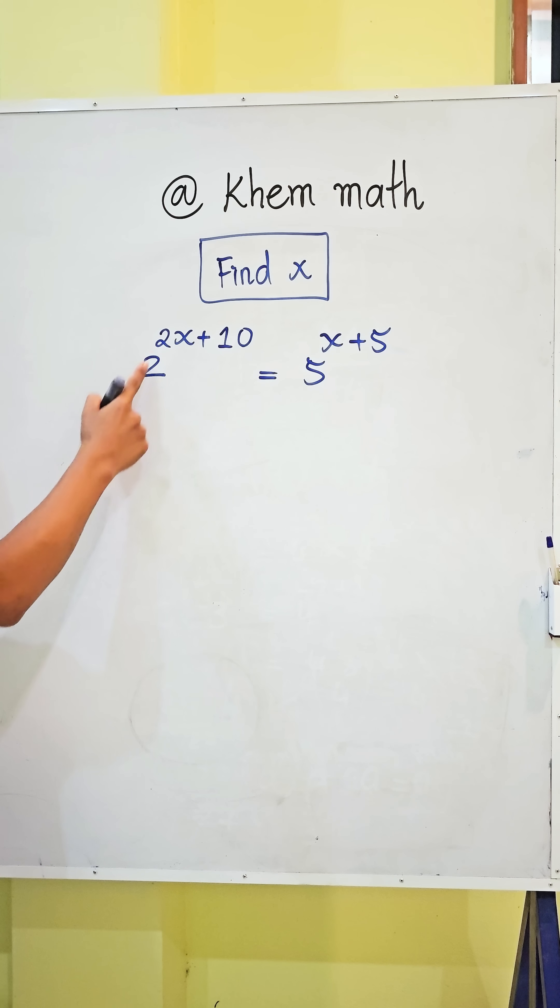We have the equation: x plus 10 over 2 equals x plus 5 over 5. The first step here, we see this 2x plus 10, so we can take 2 as a common factor.